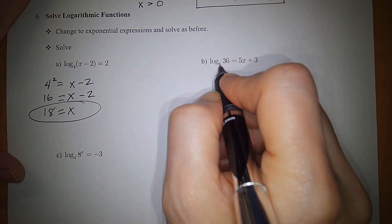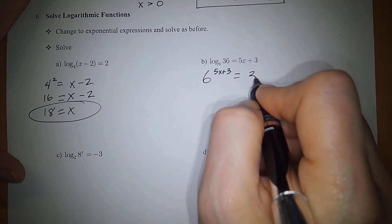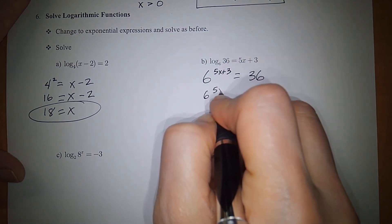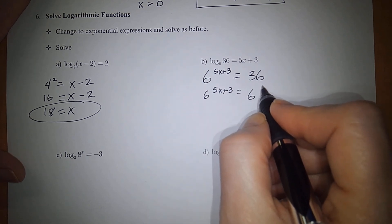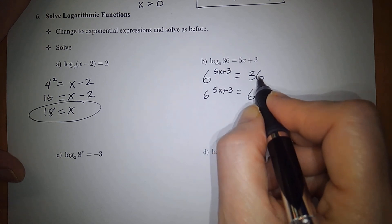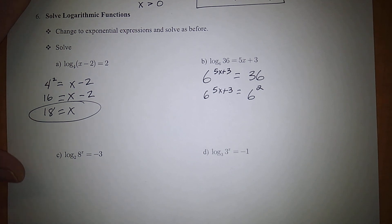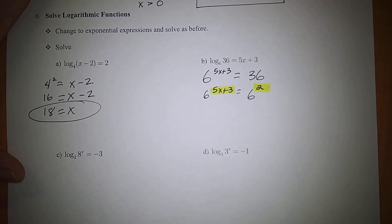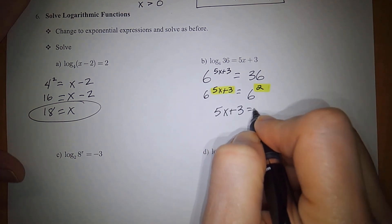For the second equation, converting gives 6 to the 5x plus 3 power equals 36. Since 36 is 6 squared, we set the exponents equal: 5x plus 3 equals 2. Subtracting 3 and dividing by 5 gives x equals negative 1/5.